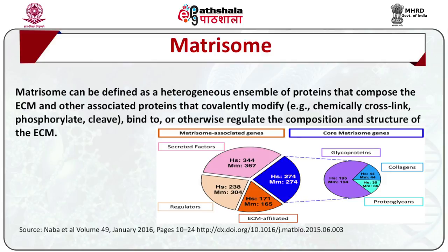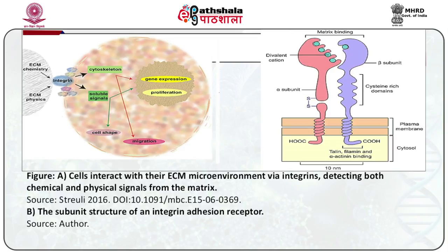Integrins are the principal class of receptors that mediate cell-matrix adhesion in epithelial sheets. These adhere to three types of most abundant molecules in the extracellular matrix: proteoglycans, collagen, and multi-adhesive matrix proteins. Integrins detect both chemical and physical signals from the matrix and deliver them to cells via large plasma membrane complexes, conveyed via cytoskeleton and signaling proteins to determine gene expression, proliferation, cell shape and migration.